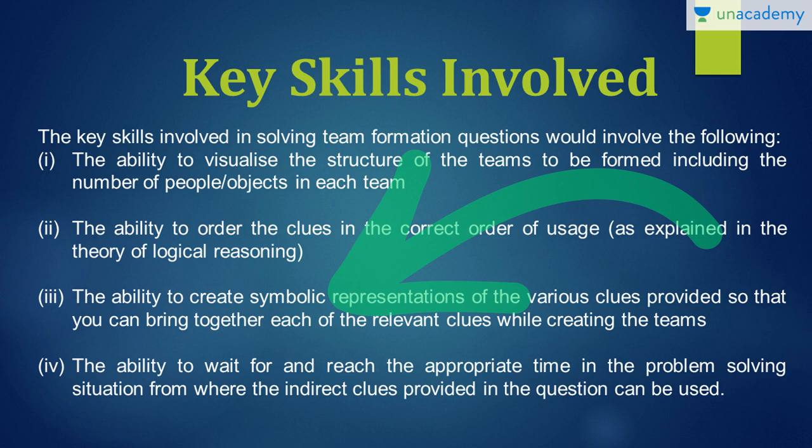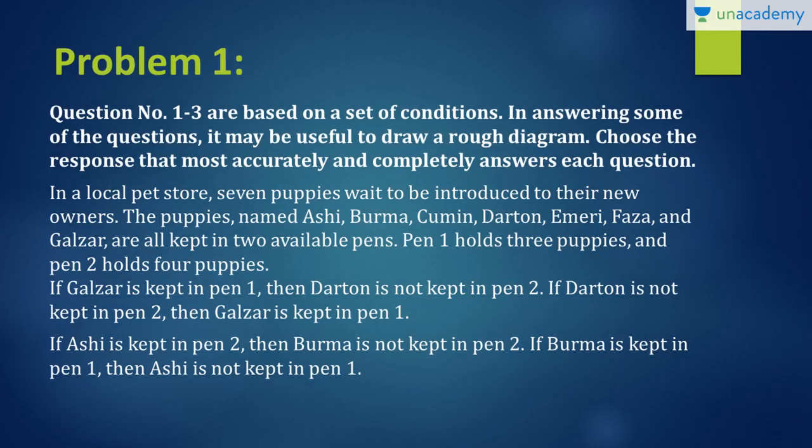We create a symbolic representation of various clues which can't be used at that time and keep it aside. So that later when we reach a stage when we have ended all the clues but still the table is incomplete, at that appropriate time, we have to use those indirect clues to fill in the table and get the complete solution.